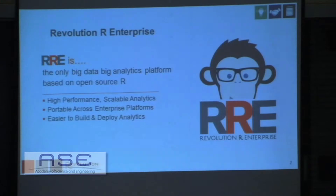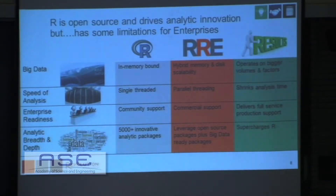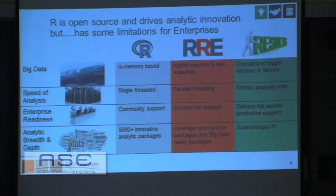What is our product, Revolution R Enterprise? We take open source R and help to make it high performance and scalable, make it portable across enterprise platforms, and make it easier to build R scripts and deploy those analytics within an enterprise. A lot of the core routines in open source R, such as linear regression, are memory bound — they assume that all the data will fit in memory, which is fine on a laptop but not when you have a huge amount of data in a clustered system. So we add functions that handle the distributed case where data is too large to fit in memory. Also, the core functions in R are single threaded; in Revolution R Enterprise, we've added parallel threading to fully support multi-core processors.